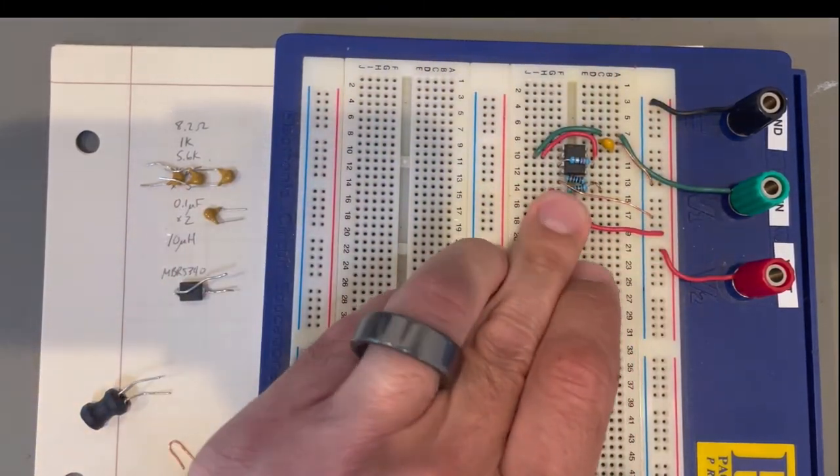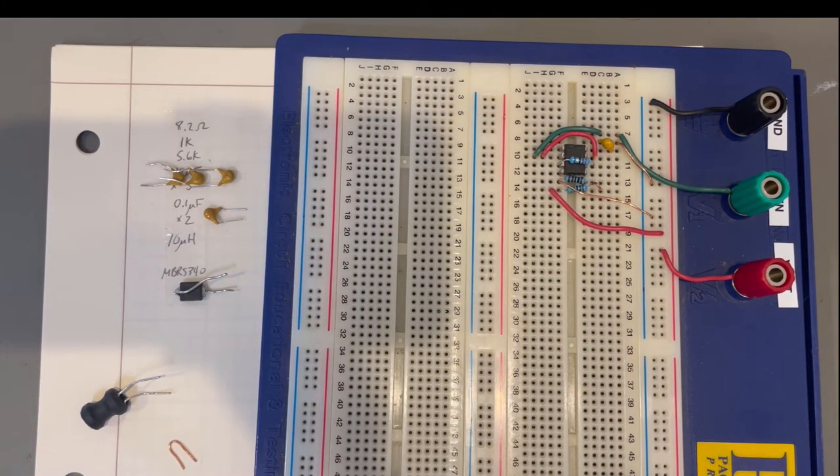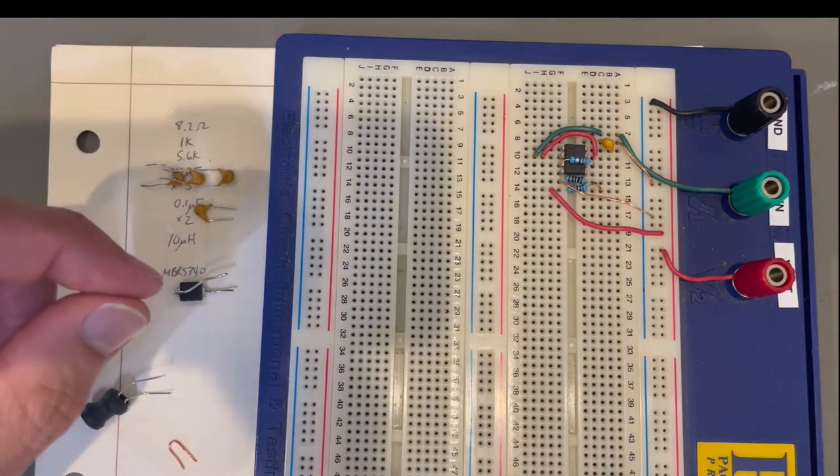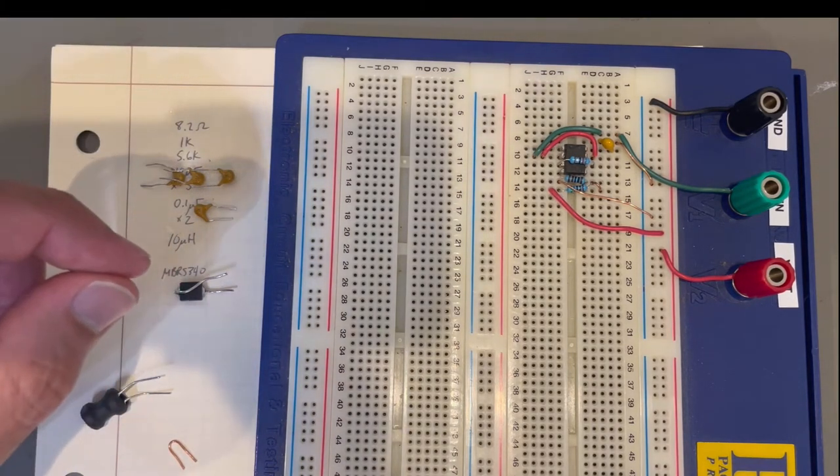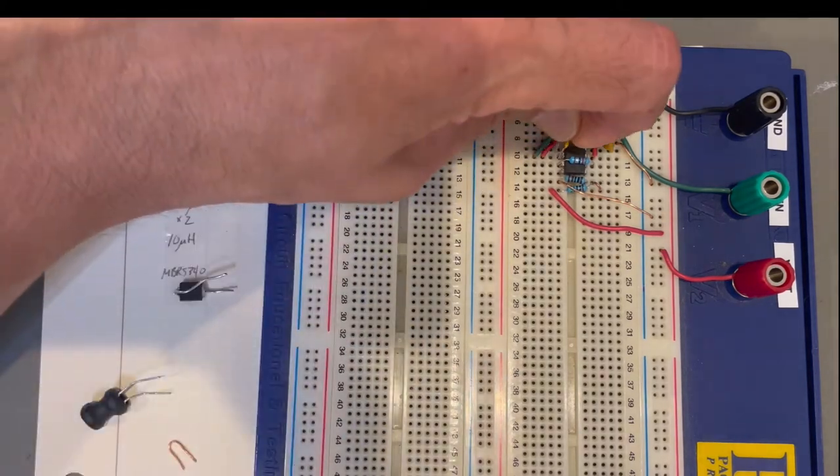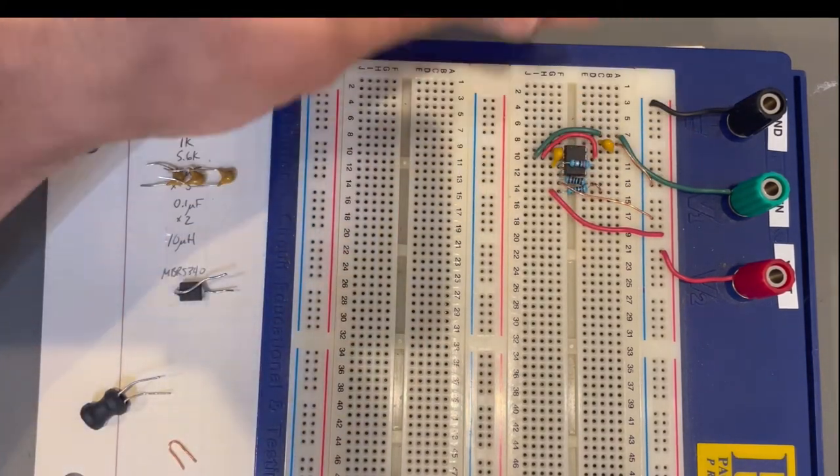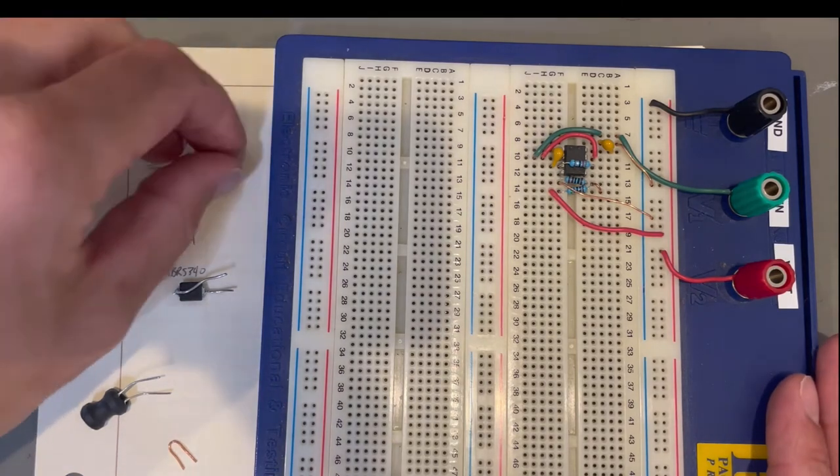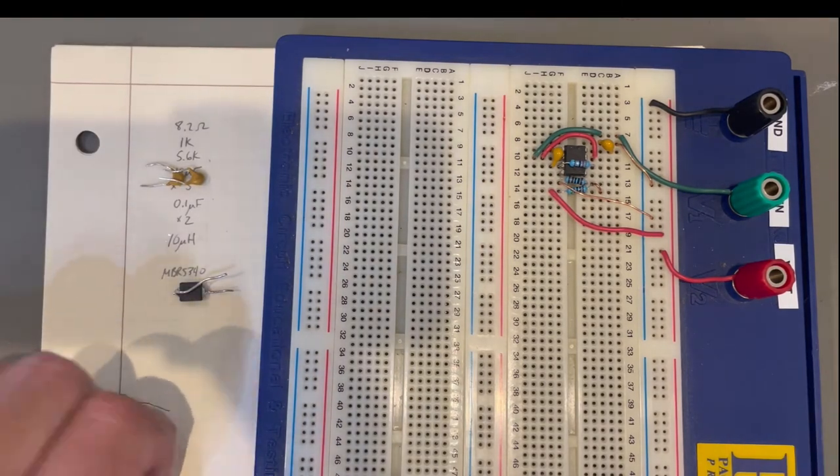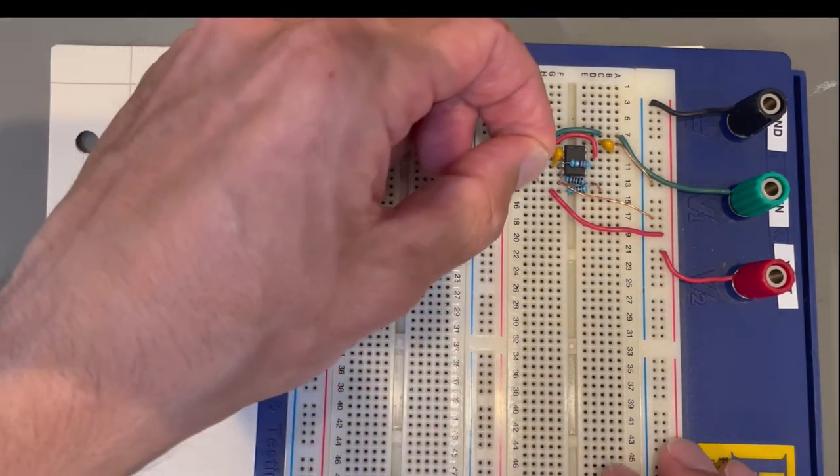so the output voltage changes as the input voltage changes and as the load current changes, or they use an external microcontroller to monitor and adjust the output. The circuit that I'm showing today regulates the output based on two resistors connected to the feedback pin and has all the features you would expect from a modern buck converter.